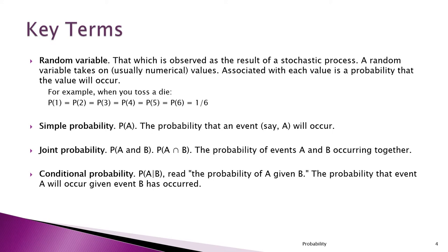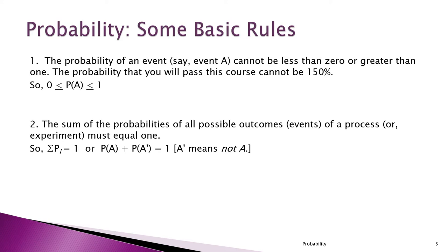Here are some basic rules about probability. The probability of an event will never be less than zero and never greater than one. A probability is exactly like a proportion, which also can't be negative and can't be greater than one. So if you tell me the probability that you will pass this course is 150%, you're starting at a disadvantage right away.